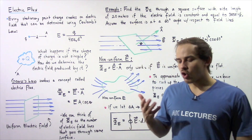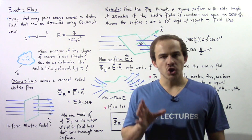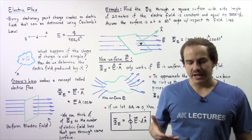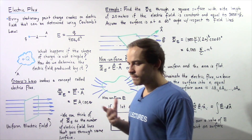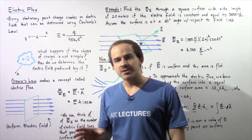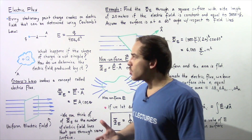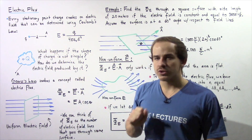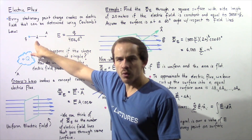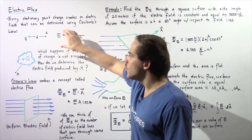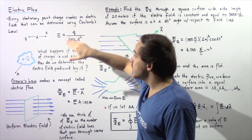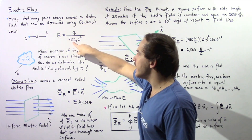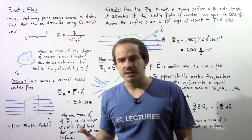We spoke about electric charges, which were always assumed to be point charges. Every single stationary point charge creates its own electric field, and the quantity of electric field is given by an equation derived from Coulomb's law. So if we have a point charge Q and we want to calculate the electric field at point A, a distance D away, the equation states that the quantity of charge must be divided by 4 pi epsilon naught multiplied by the distance squared.